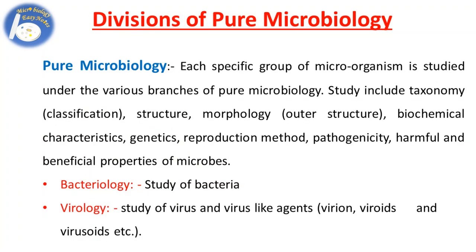Pure Microbiology: Each specific group of microorganism is studied under the various branches of pure microbiology. The study includes taxonomy, which means classification; structure; morphology, which means outer structure; biochemical characteristics; genetics; reproduction methods; pathogenicity; and harmful and beneficial properties of microbes.